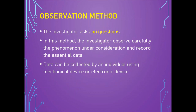In the observation method, the person who collects the data asks no questions but observes carefully the phenomenon under consideration and records the essential data. Observation can be done by an individual or by using a mechanical or electronic device. The major disadvantage of this method is the matter of accuracy — it is very difficult to produce accurate data through this method. Physical difficulties on the part of the observer may also cause inaccurate data. Due to these difficulties, the questionnaire method is widely used for collecting the required data.